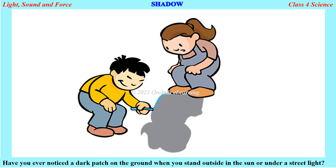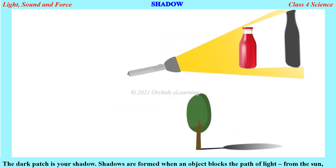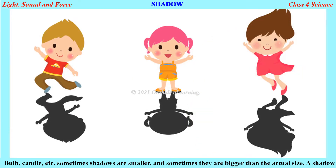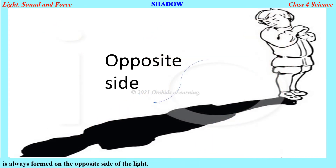Shadows: Have you ever noticed a dark patch on the ground when you stand outside in the Sun or under a street light? That dark patch is your shadow. Shadows are formed when an object blocks the path of light from the Sun, bulb, candle, etc. Sometimes shadows are smaller and sometimes bigger than the actual size. A shadow is always formed on the opposite side of the light.